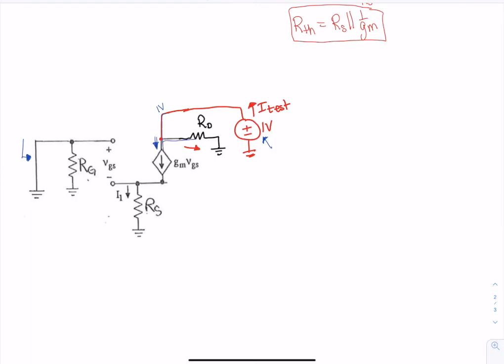And I can do a node voltage again to give me gm vgs, and then plus one over rd minus i_test equals zero. And vgs now is zero volts here.